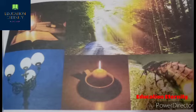In a convex mirror, the reflecting surface is on the outside of the curve. A convex mirror is also known as a diverging mirror because parallel rays of light falling on it appear to diverge, but seem to converge at a point behind the mirror called the focus.